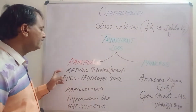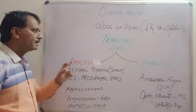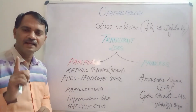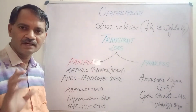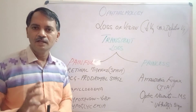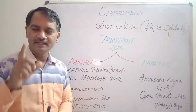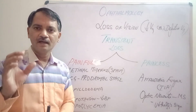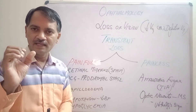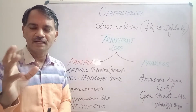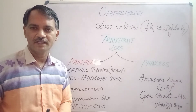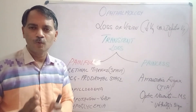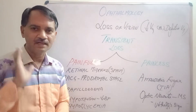Coming to the painful transient loss of vision, we have retinal migraine. Migraine is a one-sided headache due to vasospasm. Retinal migraine is vasospasm in the retina. When the vessel in the retina undergoes vasospasm, suddenly the blood flow to the retina is affected leading to transient loss of vision. Once the spasm goes away, the vision returns back.